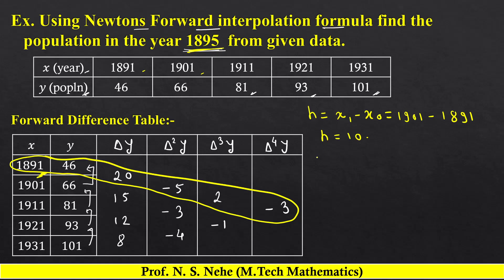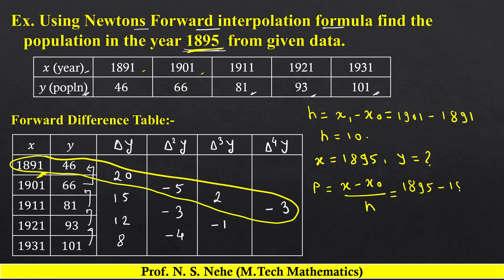x की value given है 1895, हमें y की value find out करनी है। p का formula है: p = (x − x₀) / h. x = 1895, x₀ = 1891, h = 10. Calculations करेंगे: p = (1895 − 1891) / 10 = 4/10 = 0.4. So p की value है 0.4.